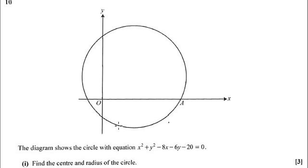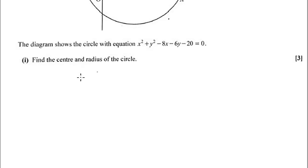Okay, question 10 part 1 has given us a circle and asks us to find the center and radius. They've given us the equation in expanded form, so we're going to need to complete the square for x and y to get the center and radius.